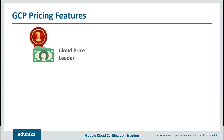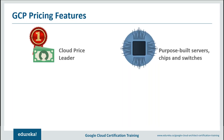Next we have GCP pricing features. Firstly, GCP leads the pack when it comes to pricing. AWS is leading in terms of cloud service providers in the market, but if you compare its pricing with GCP, GCP is still 60% more affordable than AWS. So when you talk about pricing leadership, it goes to GCP.